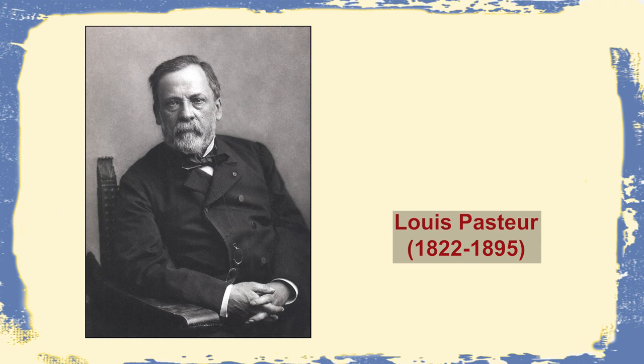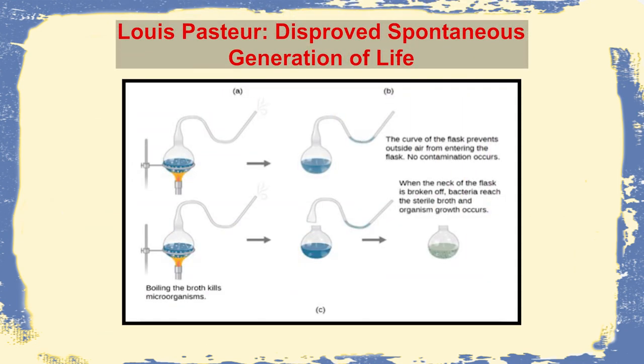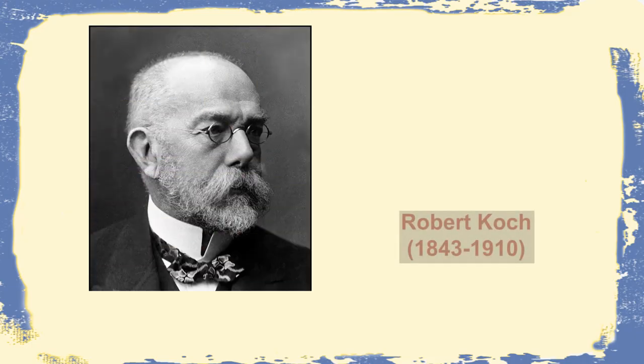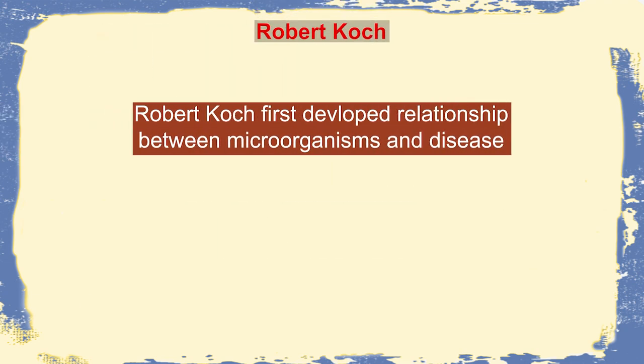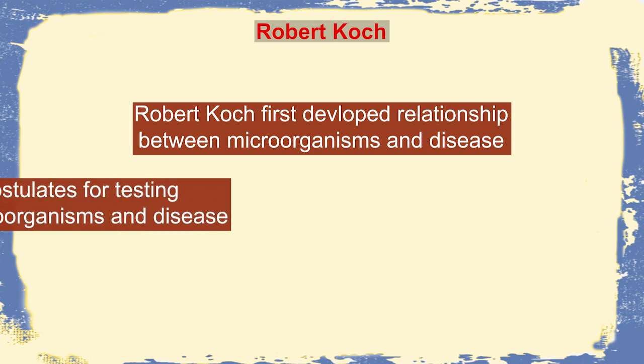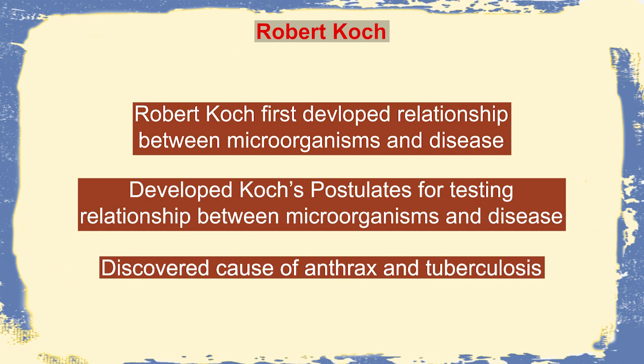Finally, the decisive stroke was made by Louis Pasteur in 1861, where he disproved spontaneous generation and demonstrated that microorganisms in the environment were responsible for microbial growth in nutrient broth. The germ theory was further enhanced by Robert Koch, who first established the relationship between microorganisms and the diseases they caused. He gave his molecular postulates for testing this relationship, and was also famous for discovering the causes of anthrax and tuberculosis.